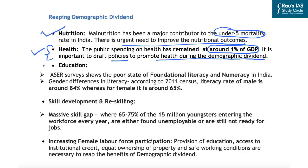The second factor is health. Public spending on health has remained at around 1% of GDP, and it is important to draft policies promoting health during this phase of demographic transition. Third is improving educational status — various reports highlight poor foundational literacy and numeracy. According to the 2011 census, male literacy is around 84% while female literacy is around 65%, highlighting a large gender gap. India needs to improve quality of education at the foundational and primary level and narrow the gender gap in literacy, since low female labor force participation limits the demographic dividend benefits.